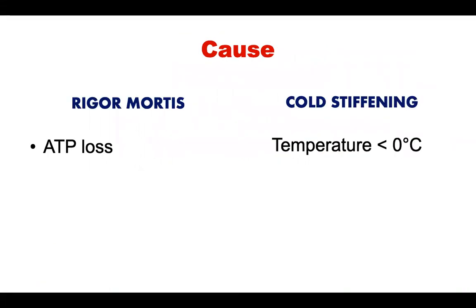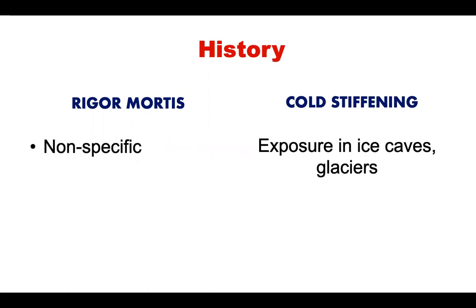Cause: in rigor mortis there will be a loss of ATP, whereas in cold stiffening it occurs at less than zero degrees centigrade temperature. History: in rigor mortis it is non-specific, whereas in cold stiffening there is a history of exposure in ice caves and glaciers.